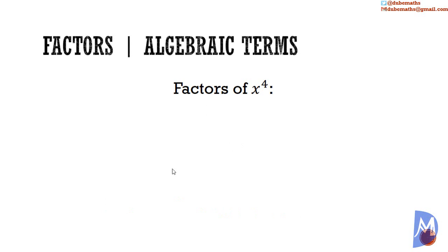What are the factors of x to the fourth power? Is 1 a factor? Yes. 1 could go into x to the fourth power, x to the fourth power times. So 1 and x to the fourth power are factors. What else? x. x is also a factor. x multiplied by x to the third power is equal to x to the fourth power.